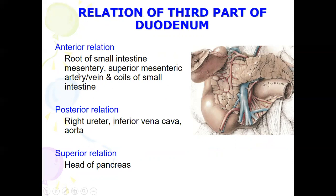The anterior relations of the third part include the root of the small intestine mesentery, the superior mesenteric artery and vein. The posterior relations include the right ureter, the inferior vena cava, and the aorta. The superior relations include the head of the pancreas.